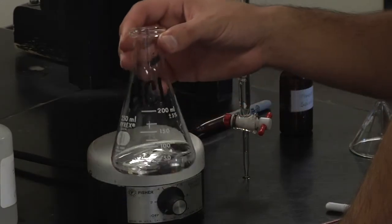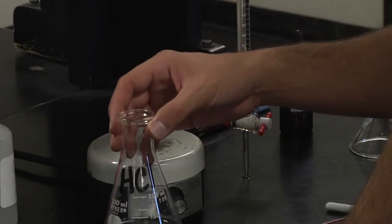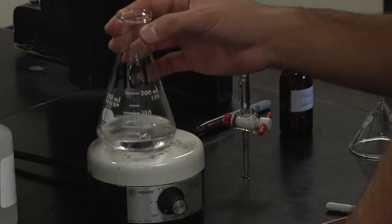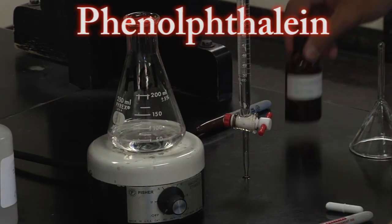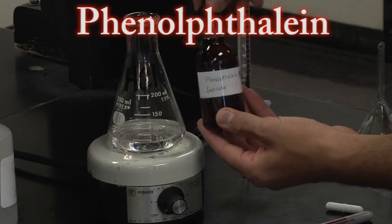We're going to have 25 milliliters of hydrochloric acid and 50 milliliters of water in a beaker. At this point we're going to add the phenolphthalein indicator. Just two or three drops should suffice.